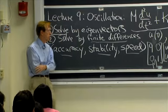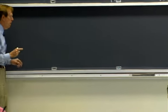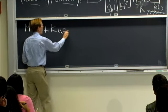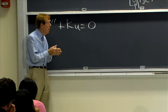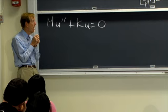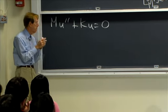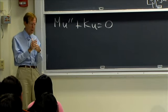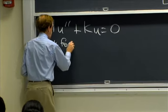May I start with the eigenvector solution? How would I solve this equation by eigenvectors? I'm going to look for a special solution. Let me write that equation again: Mu'' + Ku = 0, taking zero external force. The springs and masses are just oscillating; their total energy won't change — kinetic plus potential energy stays constant. The key idea when we have constant coefficients is to look for special solutions.